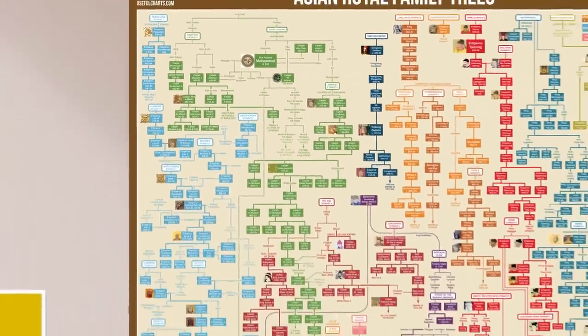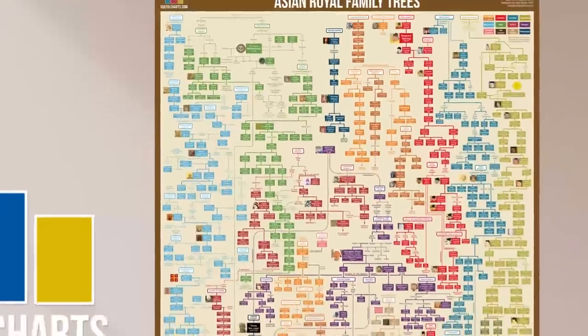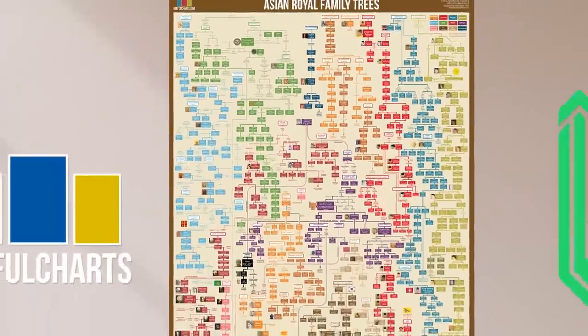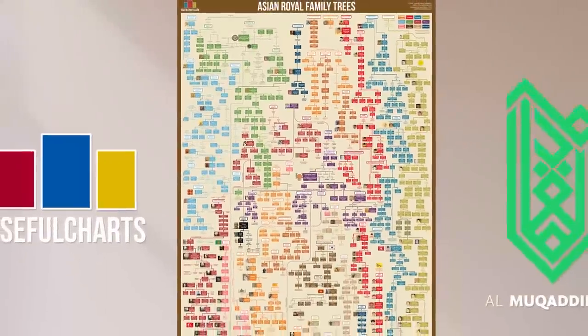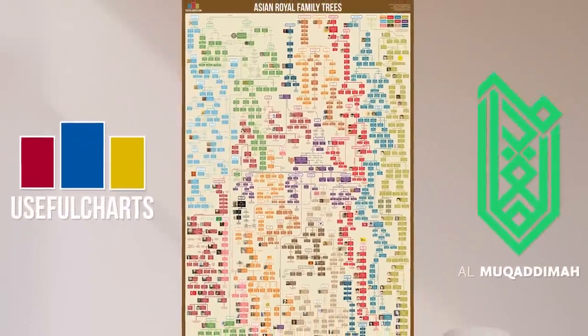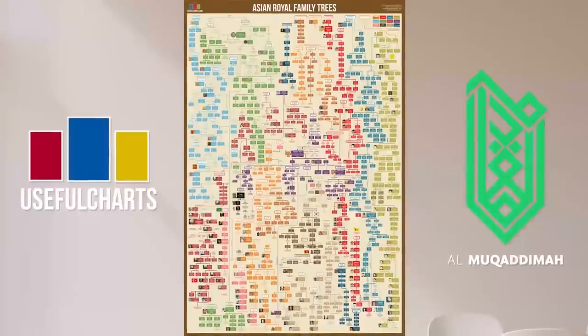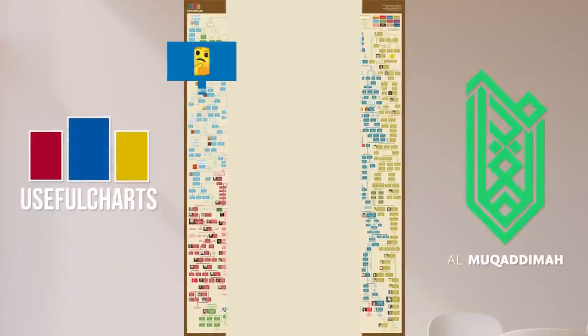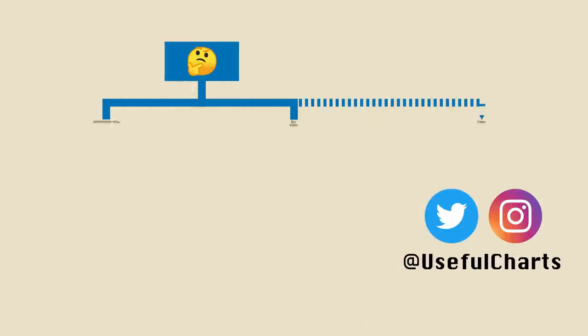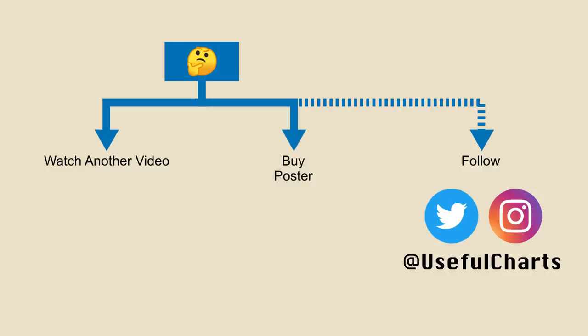That was a look at the family tree of Prophet Muhammad. If you want to learn more about the Umayyad and Abbasid Caliphates, please follow the link in the description or on the screen right now to go directly to part 2. Thank you for watching.